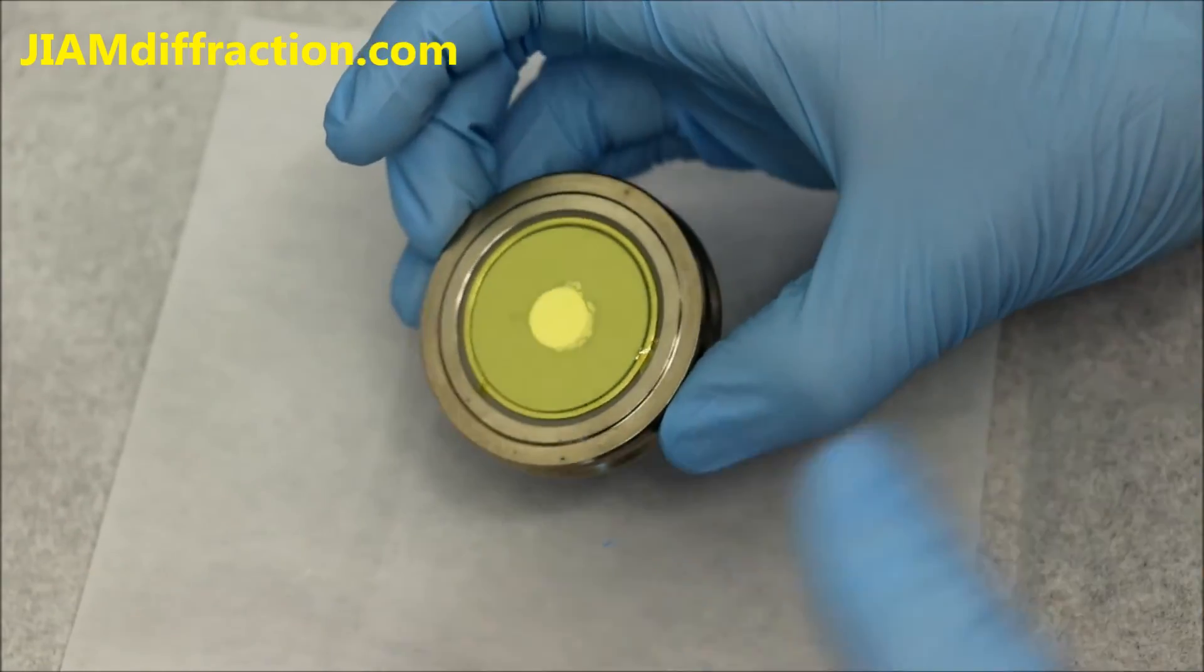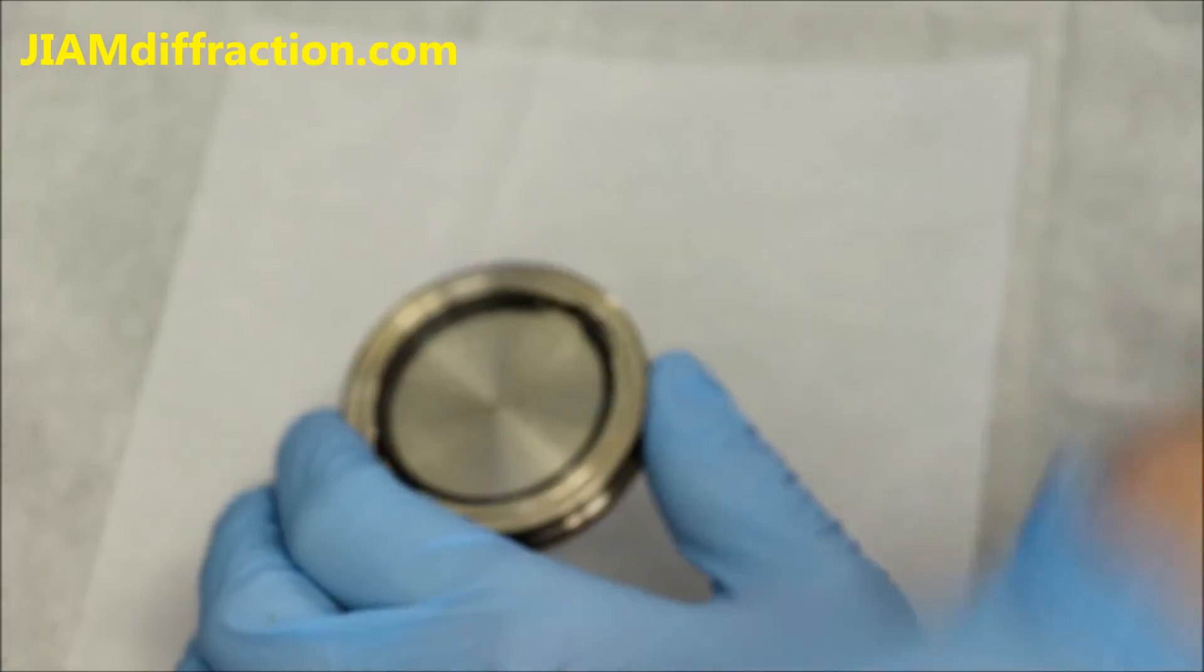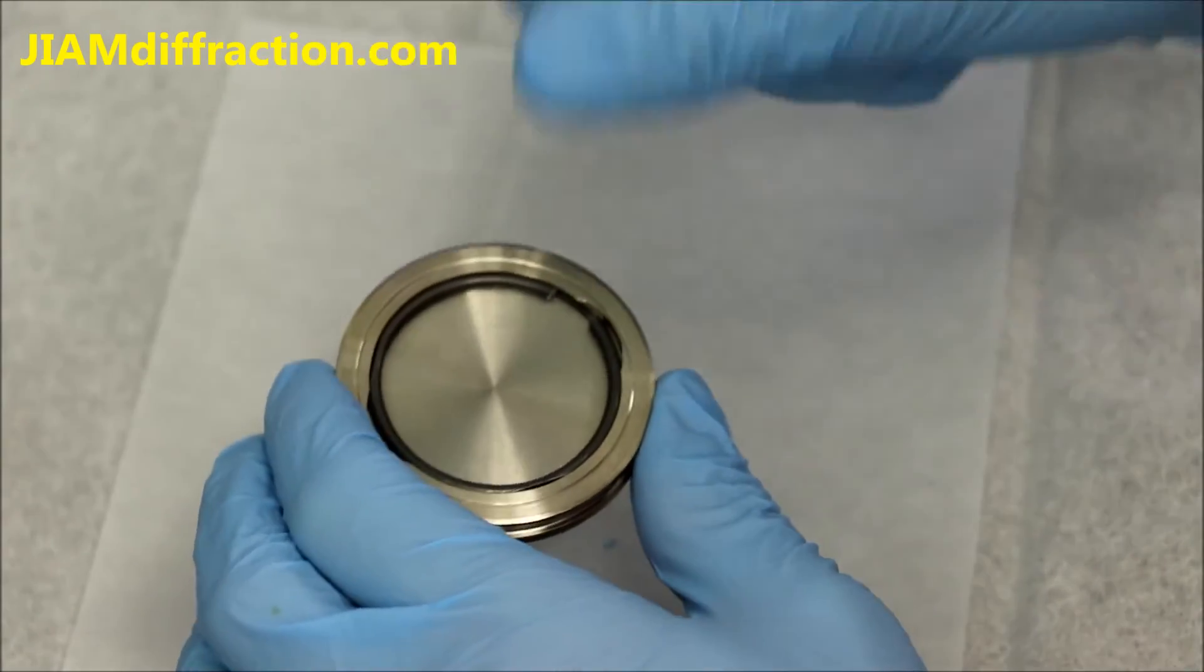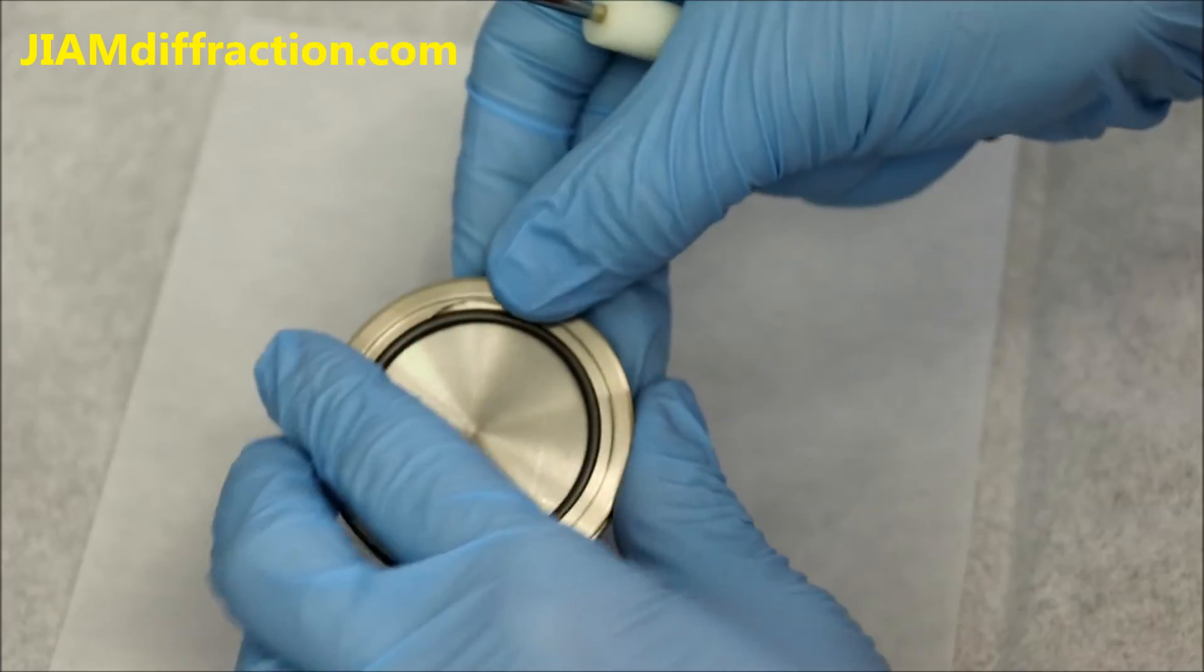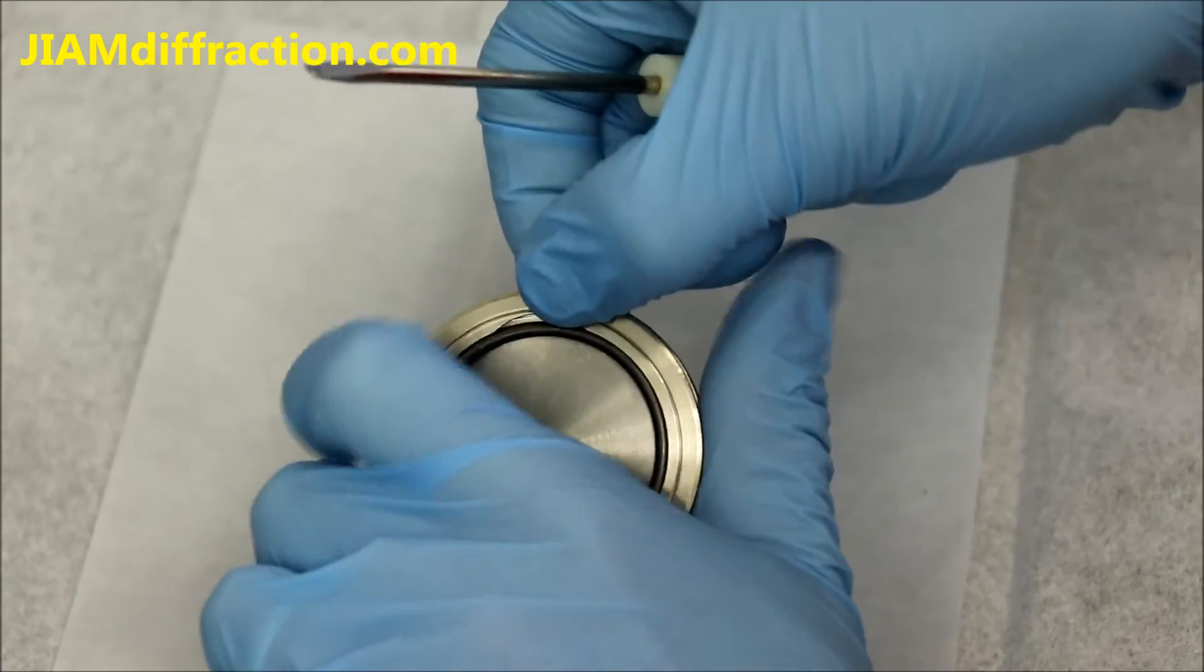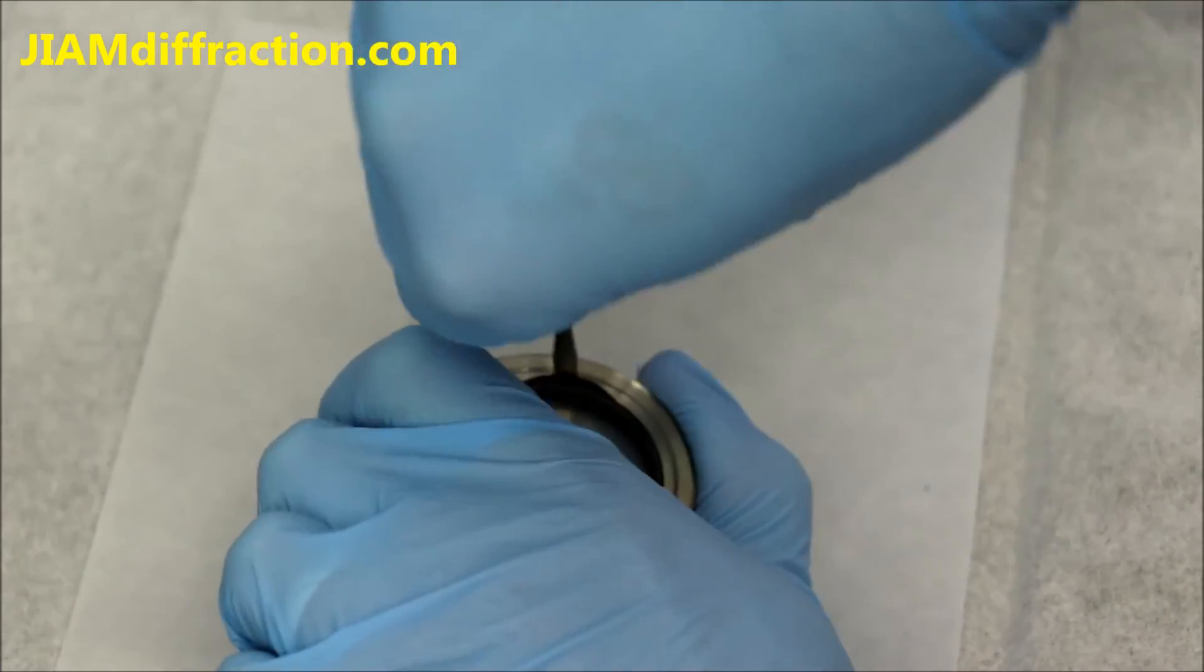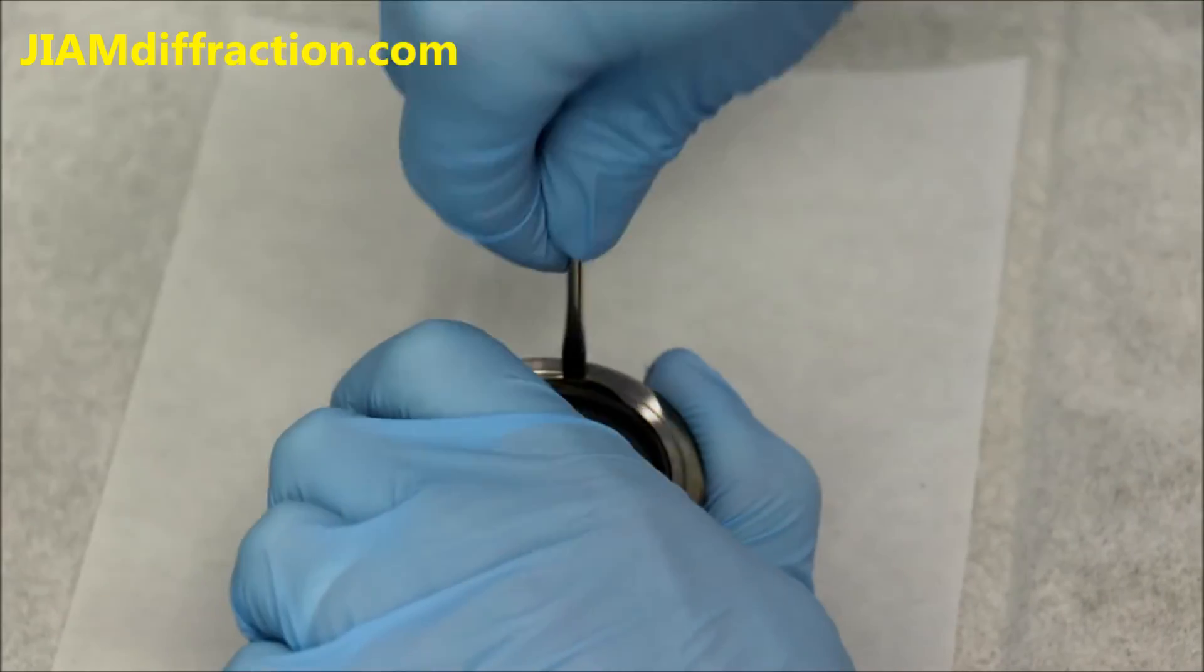Now if you want to take the sample out, typically I just use a small screwdriver and just try and wedge it in there and pry out the ring.